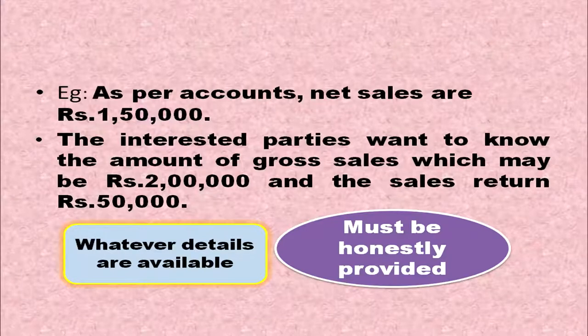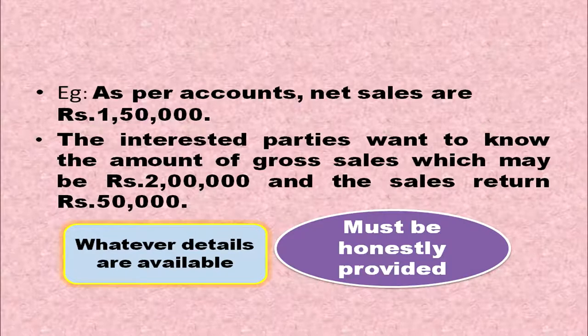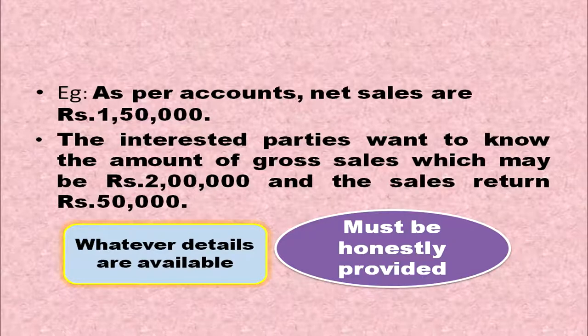For example, if net sales of Rs. 1,50,000 are shown in the accounts and users want to identify gross sales, this should be disclosed. The interested parties want to know the gross sales — which may be Rs. 2,00,000 — and sales returns of Rs. 50,000. We prepare the sales with returns in the inner column and net sales in the outer column. That is because of the full disclosure principle.